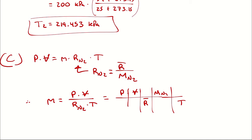I could plug in either state 1 or state 2 properties — it doesn't actually matter. Generally speaking, you should use as few calculated values as possible to limit the effect of any errors or compounding rounding errors. The 200 kilopascals has some inherent uncertainty in measurement anyway, so I'm going to use P1, V1, and T1 to try to limit uncertainty.